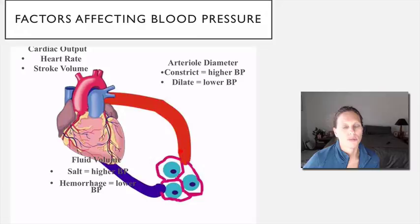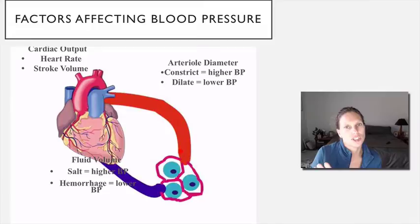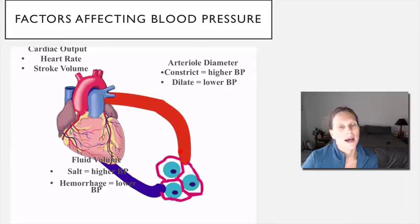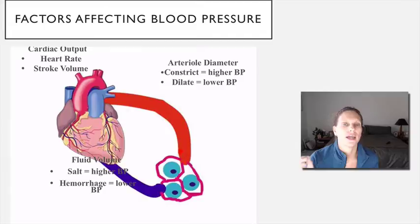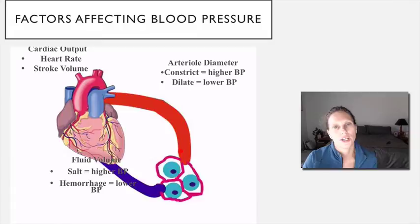When we think about blood pressure, at the very basic level it is the force of the blood pushing on the walls of the vessel. The factors that can affect blood pressure are cardiac output — how much blood is actually coming out of the heart — calculated by multiplying stroke volume and heart rate. As cardiac output goes up, blood pressure increases; if cardiac output is low, blood pressure decreases.